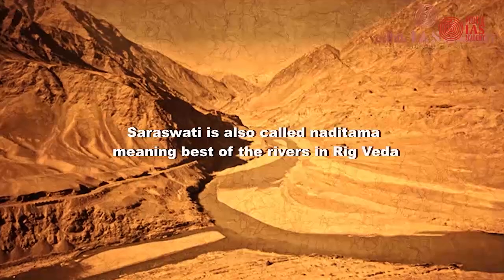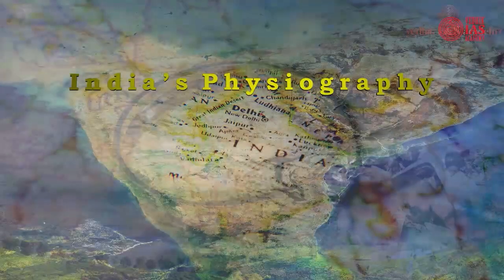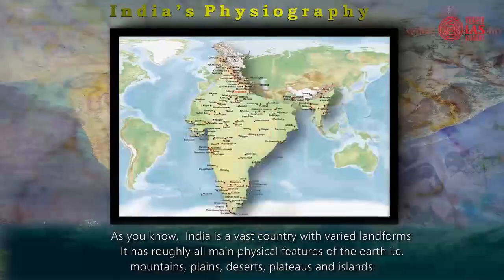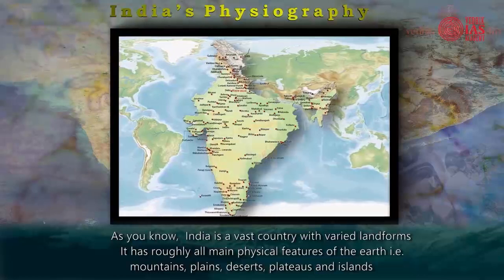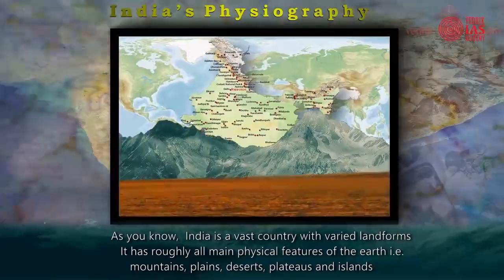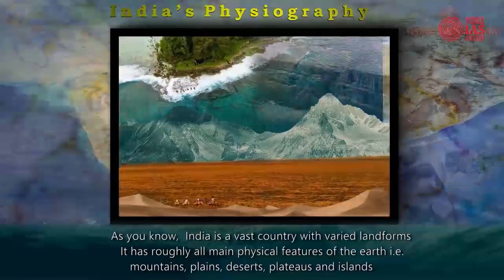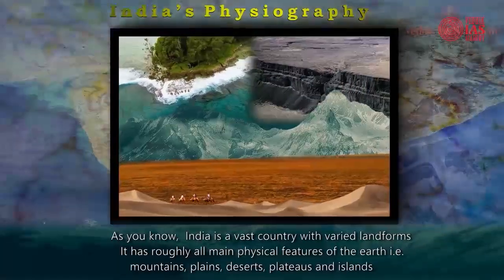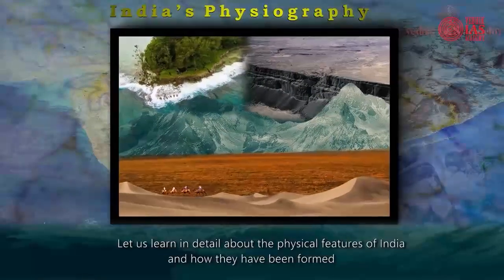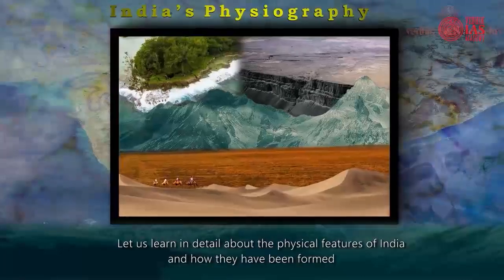Saraswati is also called Naditama. Welcome to a session on India's physiography. As you know, India is a vast country with varied landforms. It has roughly all main physical features of the earth — that is mountains, plains, deserts, plateaus, and islands. Let us learn in detail about the physical features of India and how they have been formed.